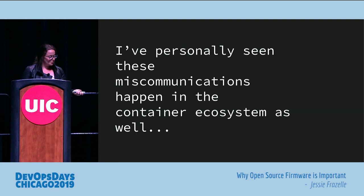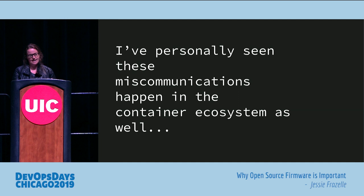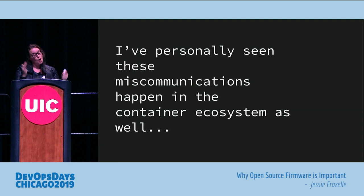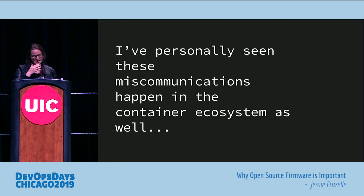These miscommunications happen when teams aren't allowed to talk, or they're so blinkered they don't think about what else could happen. Maybe they didn't know the BMC was even a vector — because their job is orchestration and they don't care about that. But if no one cares, no one's going to deal with it. Someone needs to own that high-level vision.